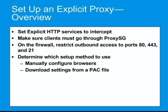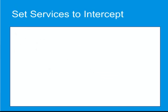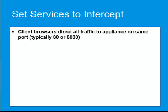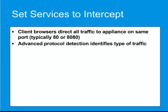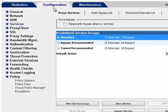You might also choose to configure the appliance to automatically detect explicit proxy settings — useful if you want to avoid complex manual configuration. For explicit proxy deployments, client browsers direct all traffic to the appliance on the same port, typically 80 or 8080. When explicit traffic is intercepted, the appliance uses an advanced protocol detection method to identify the type of traffic — HTTP, HTTPS, RTMP, and so on — and handles it according to the standards for that traffic.